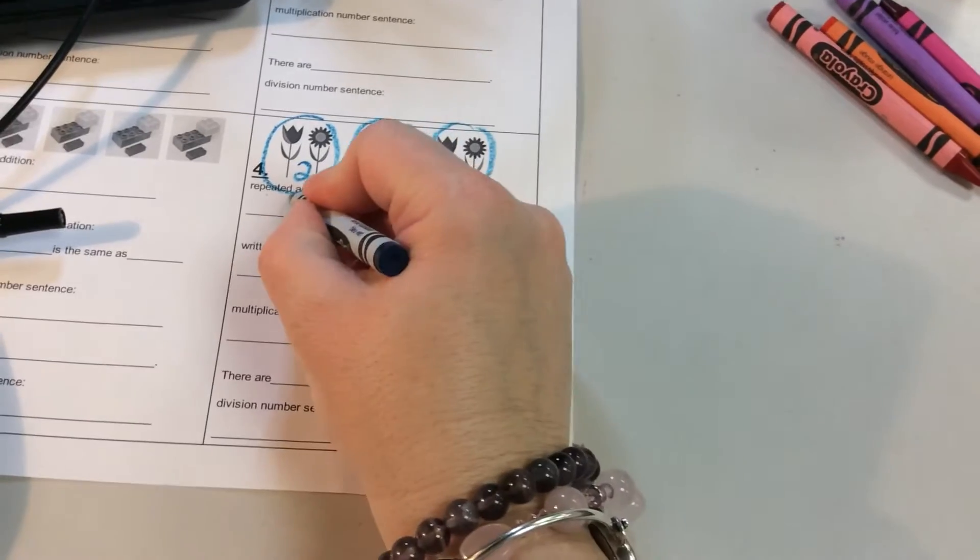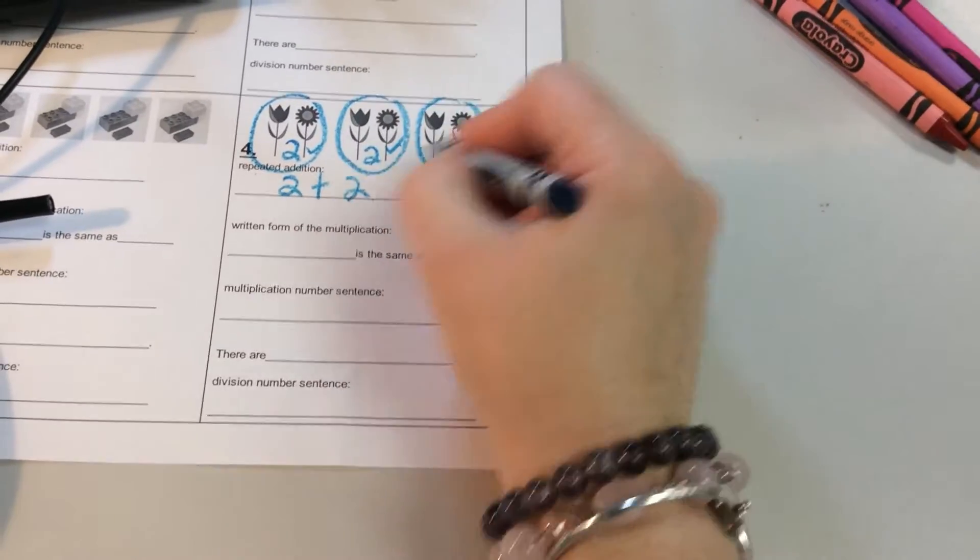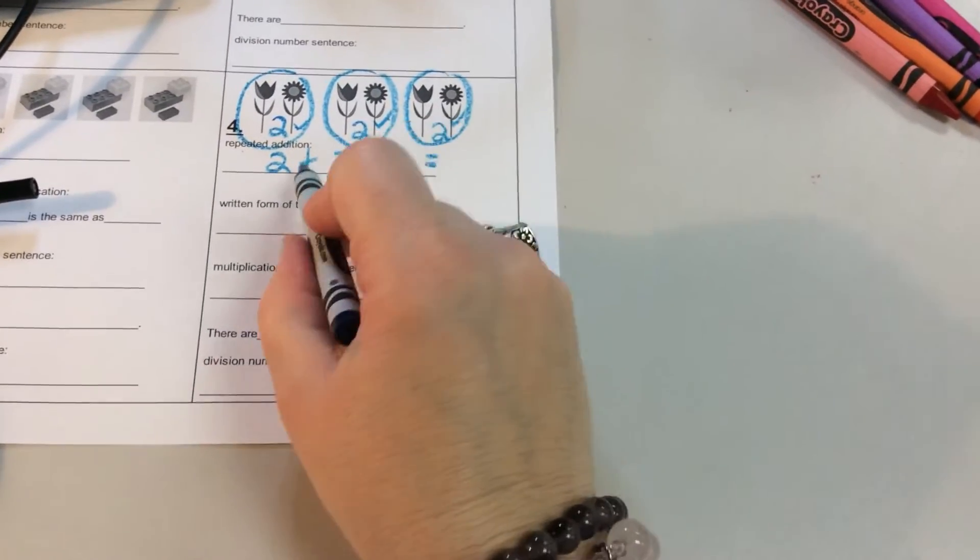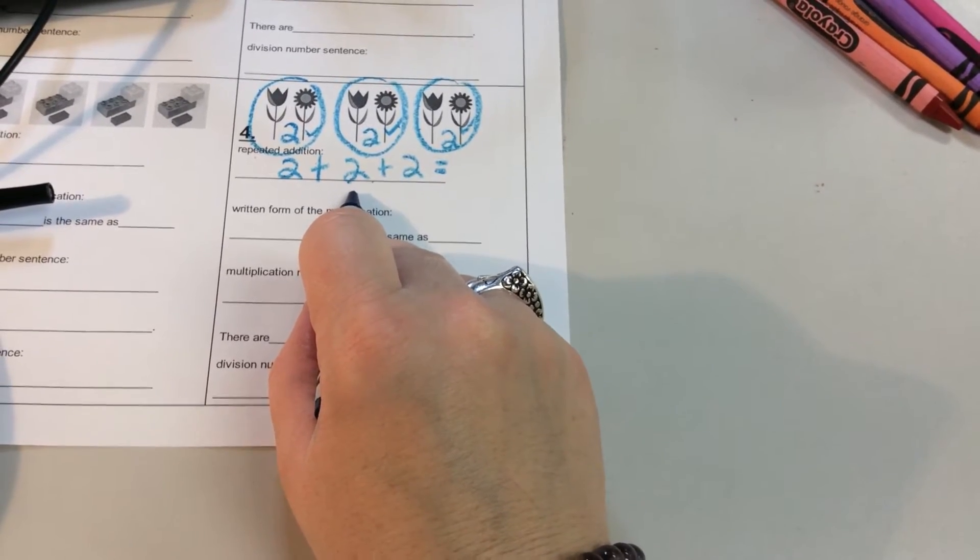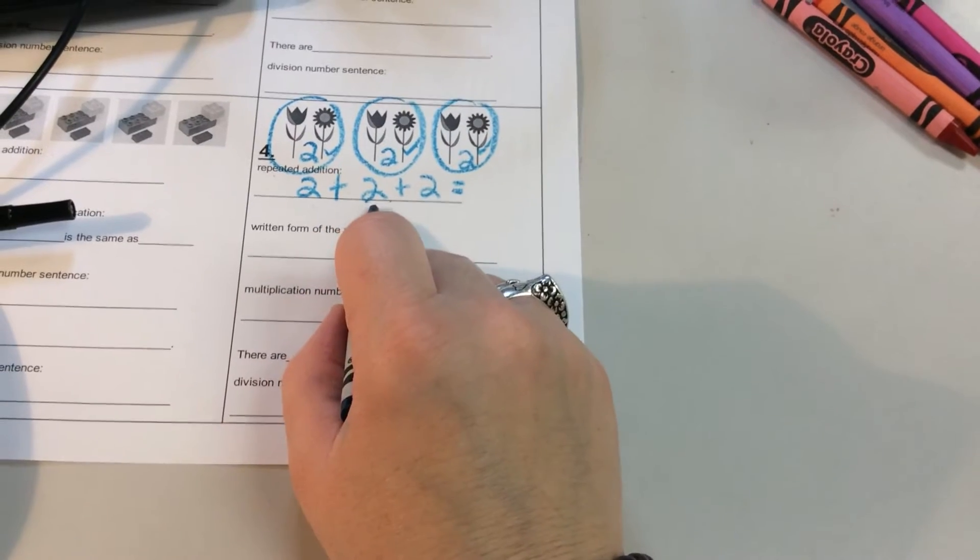Repeated addition. So two and two more and two more. And we know that two plus two more makes six. It doesn't make six. Oh no, it does not.